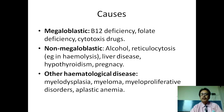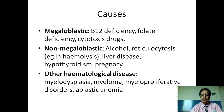The etiologies of megaloblastic anemias are vitamin B12 deficiency, folate deficiency, and cytotoxic drugs. The non-megaloblastic anemias — in western countries, alcohol is the most common etiology, then reticulocytosis especially in hemolysis, liver disorders, hypothyroidism, and pregnancy. Other hematological diseases like myelodysplasia, aplastic anemia, multiple myeloma, and myeloproliferative disorders also cause macrocytic anemias.